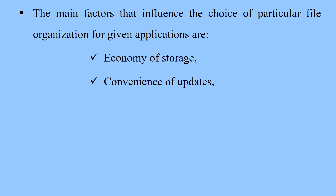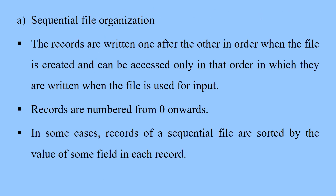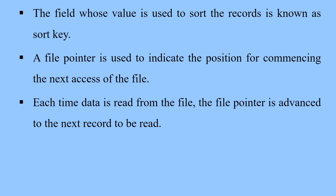In sequential file organization, records are written one after the other when the file is created and can be accessed only in that same order when the file is used for input. Records are numbered from zero. In some cases, records of a sequential file are sorted by the value of some field in each record — the field used for sorting is known as the sort key. A file pointer is used to indicate the position for commencing the next access of the file. Each time data is read, the file pointer is advanced to the next record to be read.